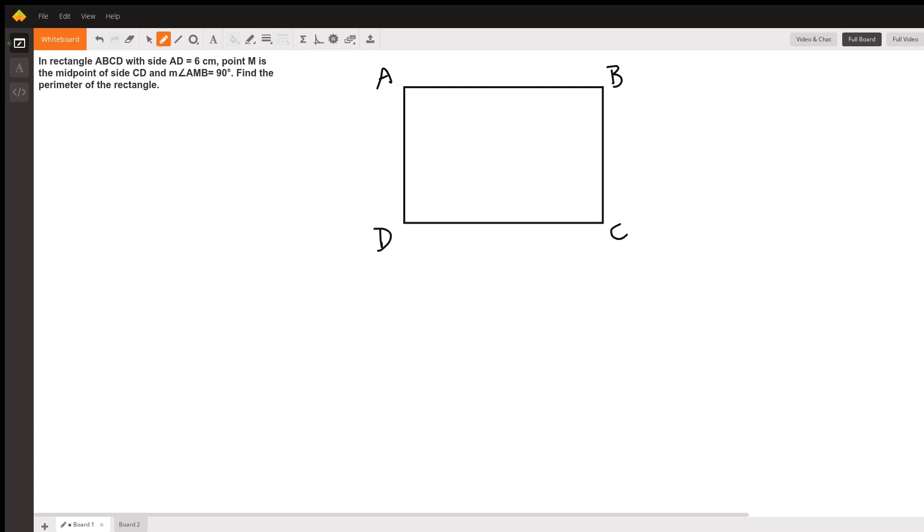We're also given that AD is 6. So this side is 6. Point M is the midpoint of side CD. So it has to be right in the middle if it's the midpoint. And angle AMB is 90 degrees. So I connect A to M and M to B. And now the angle formed by that is 90 degrees. So I'm just going to draw this little box to mean 90 degrees.